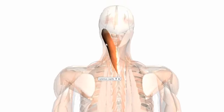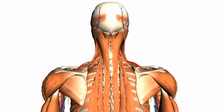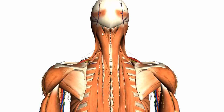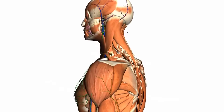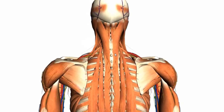This muscle here is the splenius capitis. As you can see, it inserts onto the skull. If both muscles are contracted, it draws the head backwards and extends the neck. If just one muscle is contracted, it rotates the head to that side. The splenius cervicis isn't shown on this model, but it originates a little bit lower down and inserts onto the transverse process of the first vertebra.